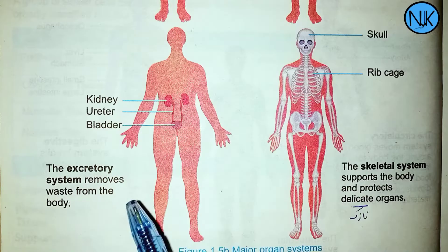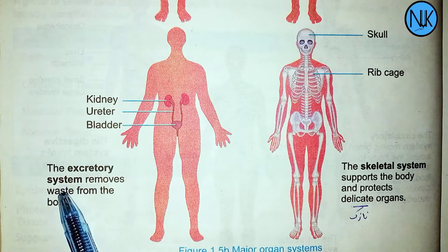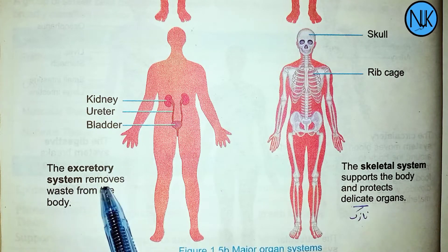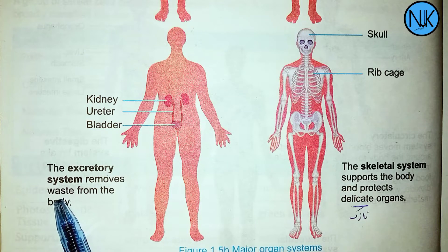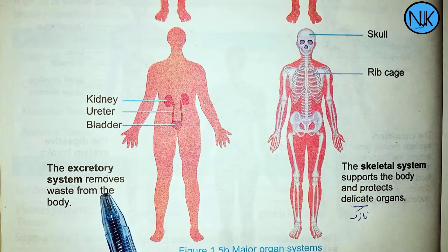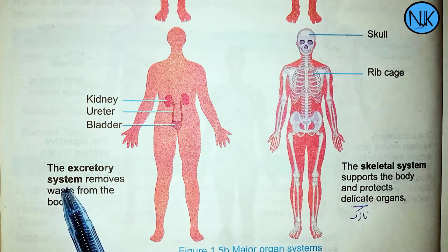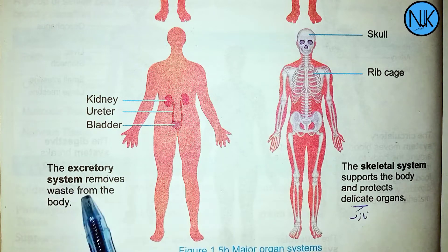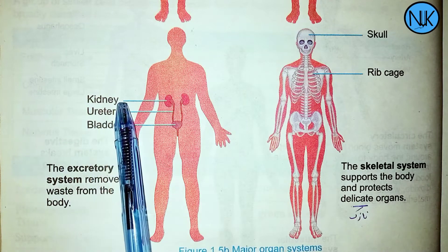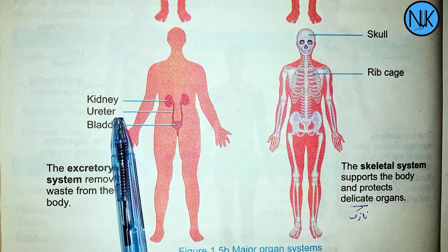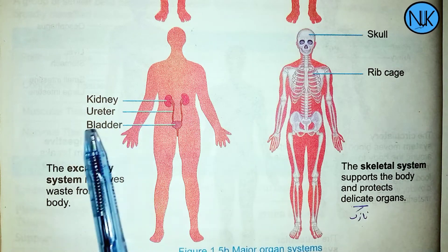The excretory system removes waste from the body. It includes the kidneys, ureter, and bladder.